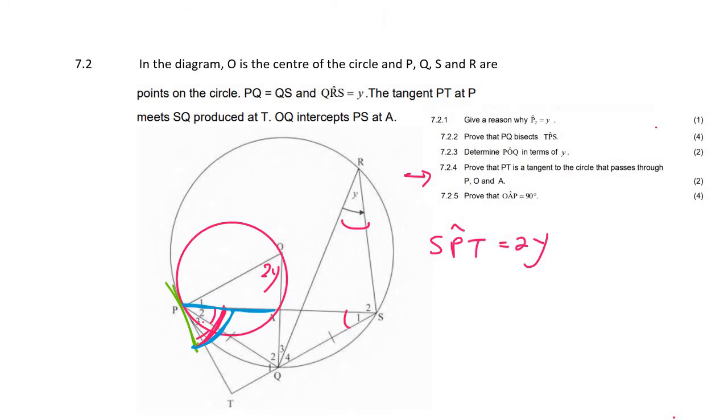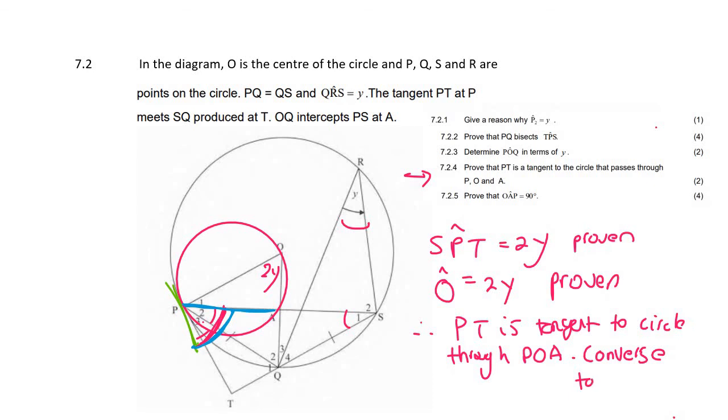So we can say that angle SPT is equal to 2y, because that's P2 plus P3, and we've already proved that those are both y. And then we need to look at the tan chord theorem. So what we can see is that if you use the tan chord theorem, it's going to give you 2y over here. And we can say that angle O is also equal to 2y. That was already proven. And then we can say therefore, because the tan chord theorem is working, we can say that PT is a tangent to the circle through POA, because of the converse, meaning the opposite of the tan chord theorem.